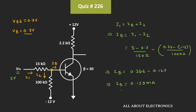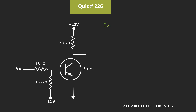Since the value of current Ib is positive, the transistor is definitely not operating in the cut-off region. Now let's find the value of the collector current. The collector current Ic can be given as βIb plus (β+1)ICBO. Typically for a transistor, the value of ICBO is in the nanoampere range, but here since the value is in the microampere range, we also need to consider this term. That means the collector current Ic is equal to 30 times Ib plus 31 times ICBO.